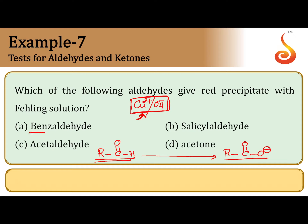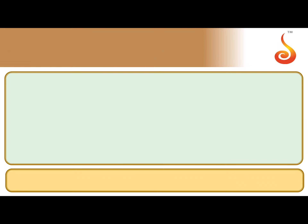Aromatic aldehydes — benzaldehyde is an aromatic aldehyde. When a benzene ring is attached to C=O, that is an aromatic aldehyde. Aromatic aldehydes or ketones do not give Fehling's test. Only aliphatic aldehydes can give it; aromatic aldehydes cannot, and aliphatic ketones also cannot give Fehling's test. Option A, being an aromatic aldehyde, would not give Fehling's test.